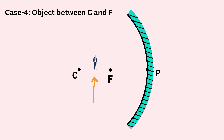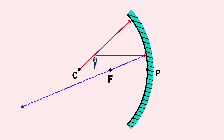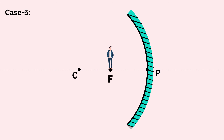Case four: the object is placed between C and F. We draw a ray parallel to the principal axis — after reflection it passes through focus F. Then a ray through the center of curvature C — it reflects back along the same path. These two reflected rays meet at a point beyond C on the reflective side of the mirror. The image is real and inverted, and because it is farther from the mirror than the object, it is enlarged or magnified.